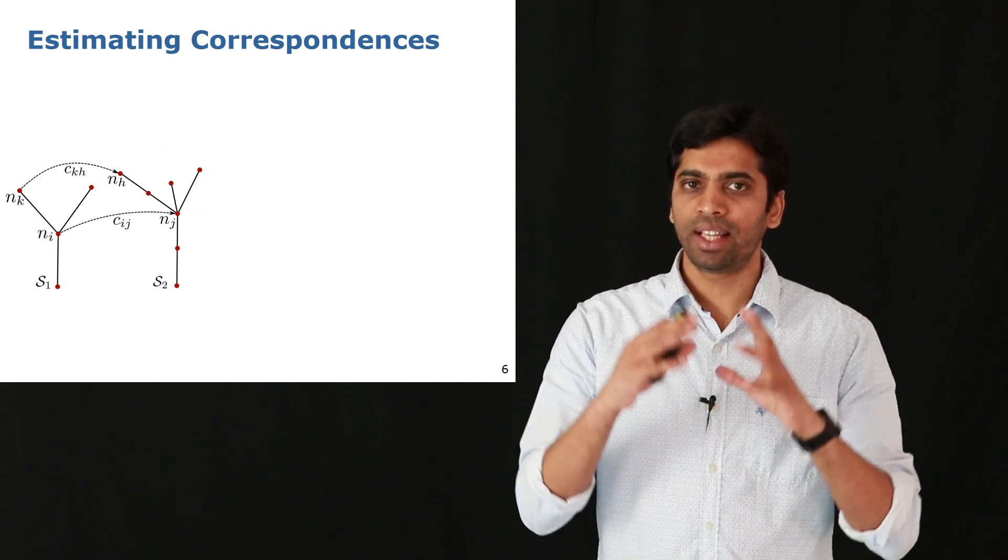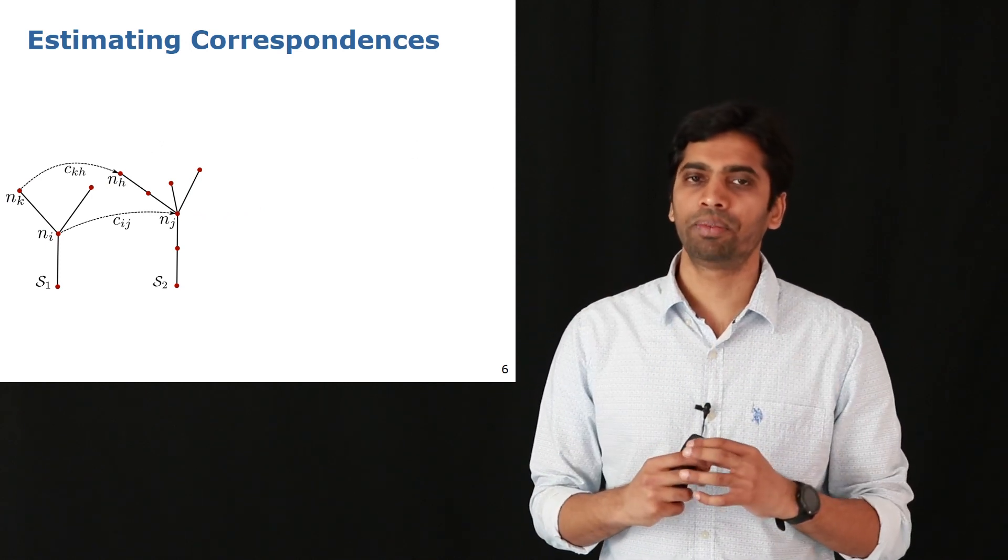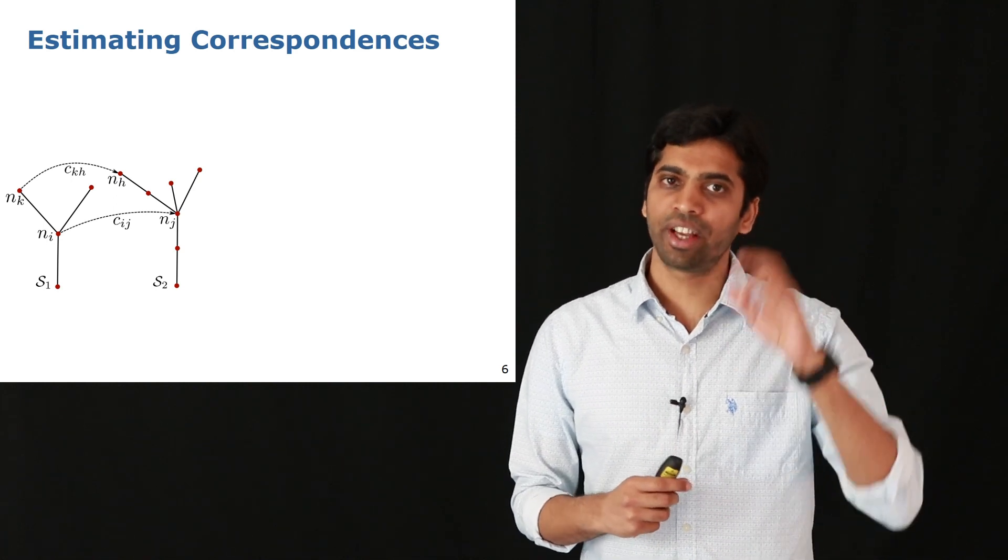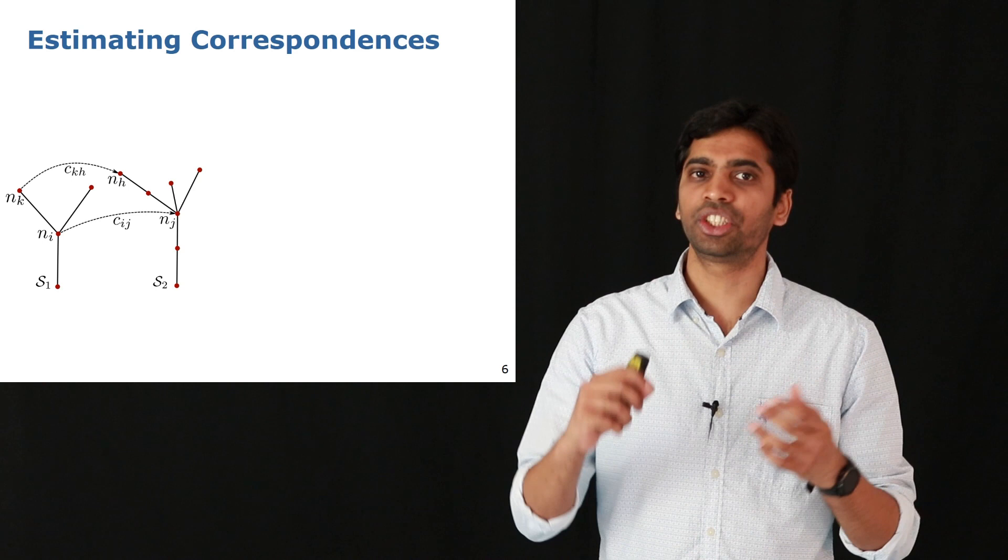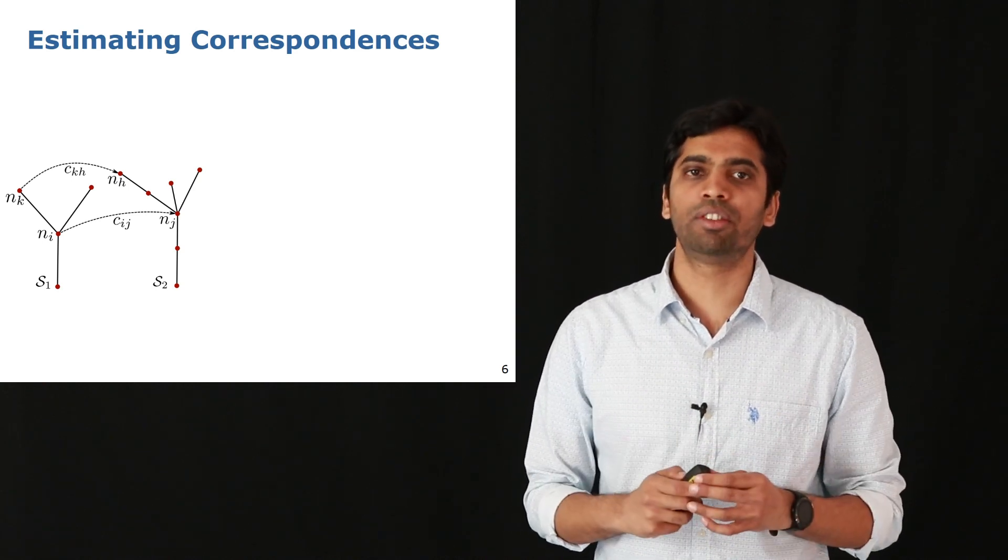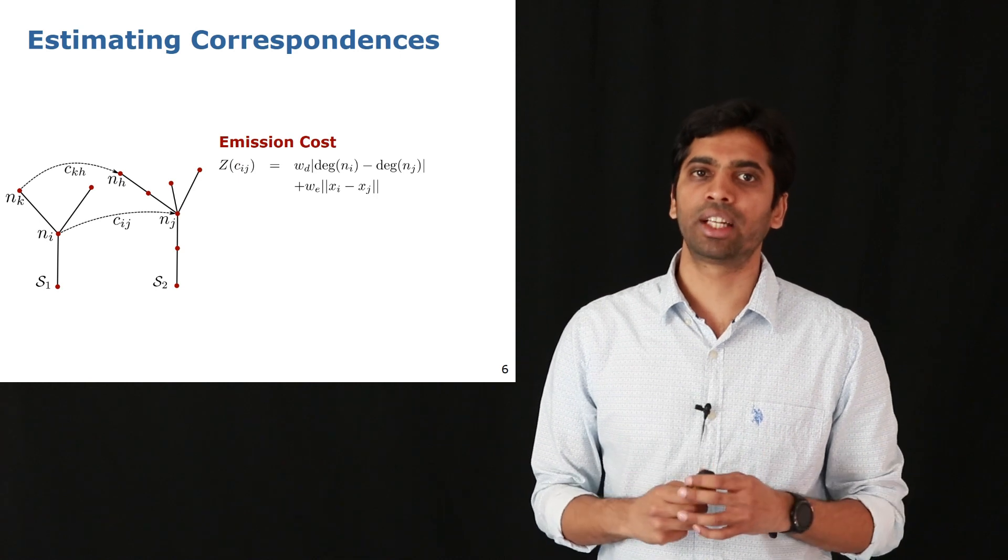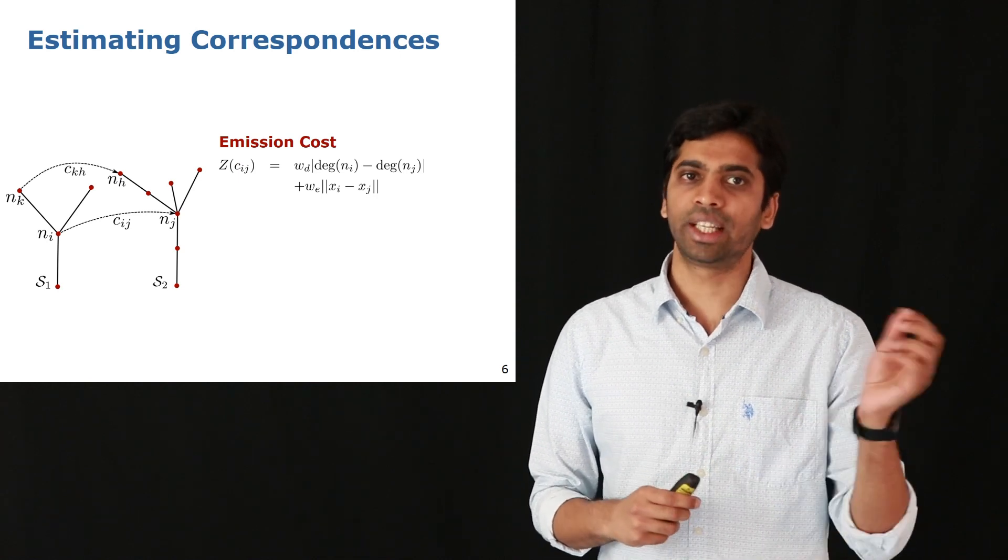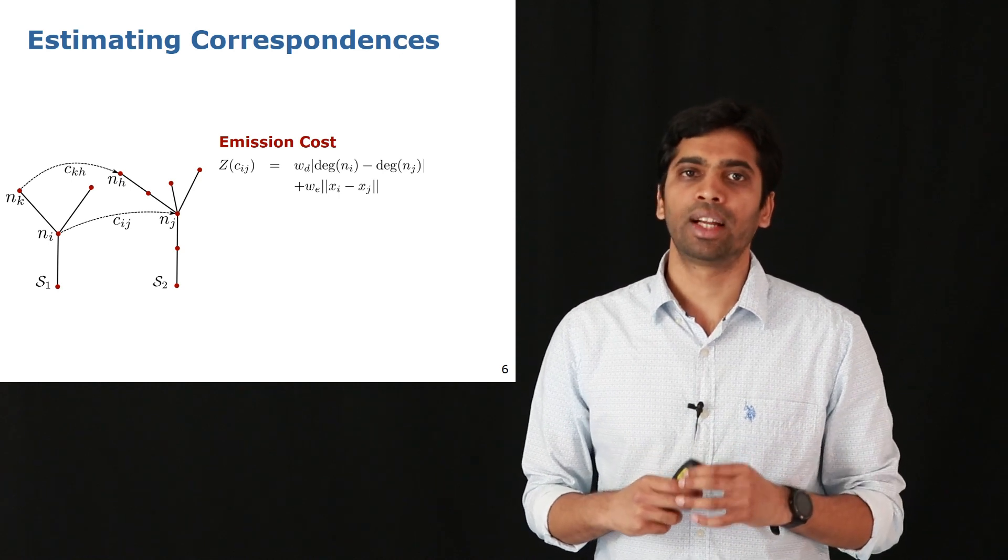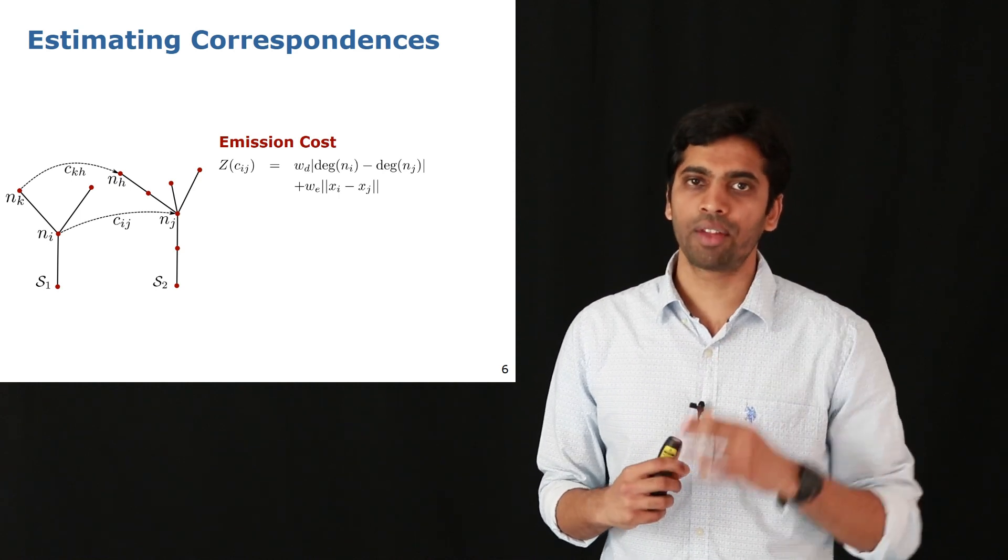In this work we formulate the correspondence estimation problem as an inference over a hidden Markov model. The hidden variables of the model, or the unknowns, are essentially the correspondences between S1 and S2. As is typical with an HMM, we first define an emission cost for each possible correspondence. This cost consists of two parts.